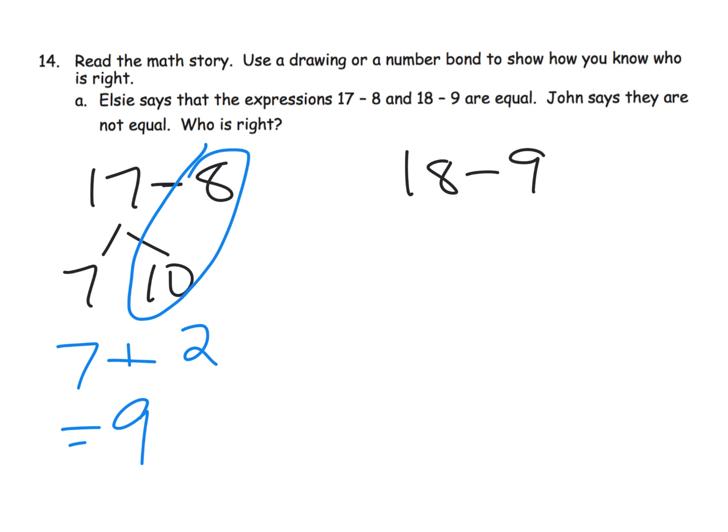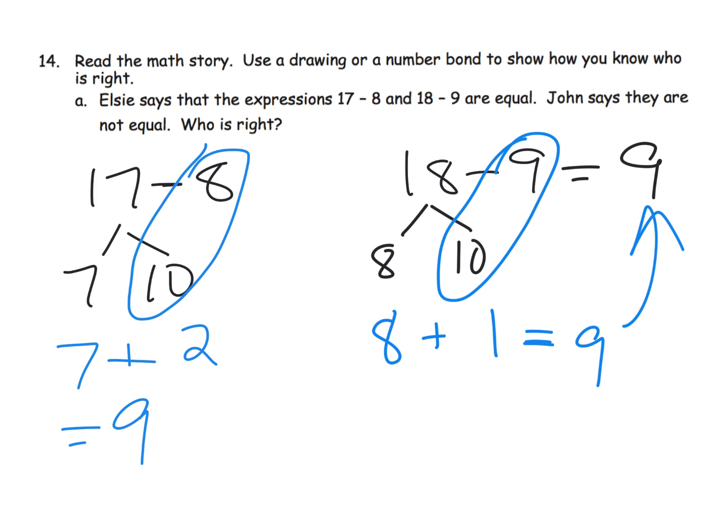And then over here, 18 minus 9. Now this is a doubles. So your students might just off the top of their head know that this answer is 9 because it's a doubles. 9 plus 9 is 18. But if they don't, that's all right. I'd probably use the subtract from 10 method. So I'm going to decompose 18. I'm going to subtract 9 from that 10. So 10 minus 9 is 1 plus the original 8 from the 18 gives me 9. And sure enough, so they are the exact same answer. So that tells us that Elsie is correct.